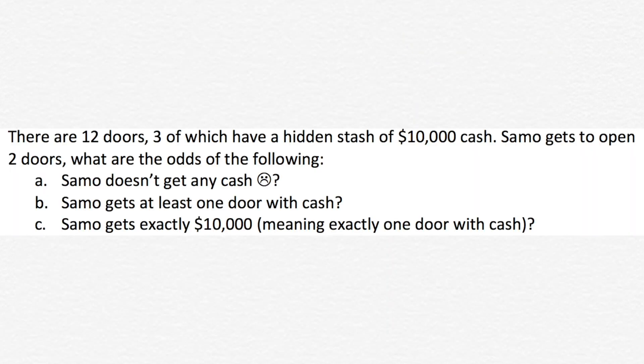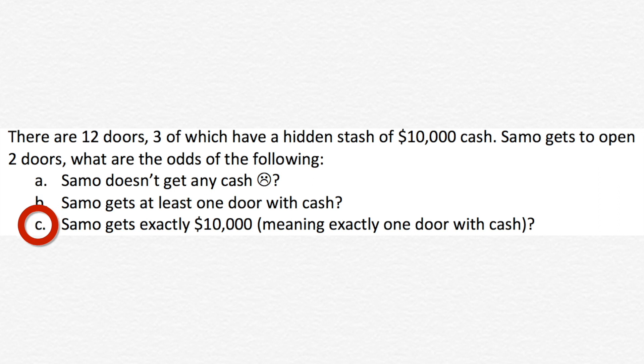Let's keep the party going. There are 12 doors, three of which have a hidden stash of $10,000 cash. Sammo gets to open two doors. What are the odds of the following: Sammo doesn't get any cash, Sammo gets at least one door with cash, or Sammo gets exactly $20,000 — meaning exactly one door with cash. Give these a shot by pressing the pause button, and then we'll do it together.